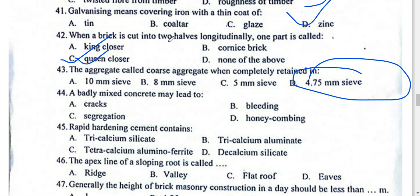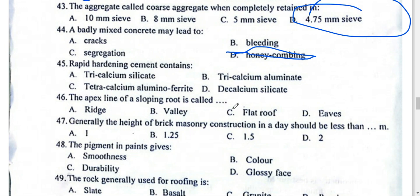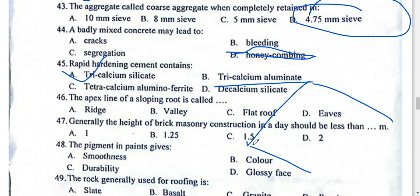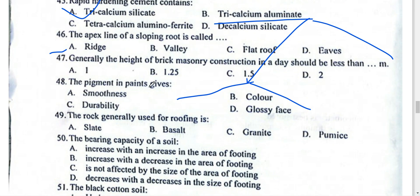Badly mixed concrete leads to honeycombing. The workability (monica/slump) is very low. The slump value should be less than 1.5 mm for low-workability mixes. For example, a low-slump concrete is used for specific structural applications.